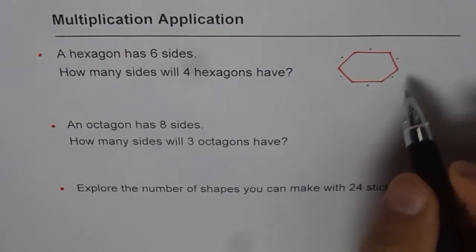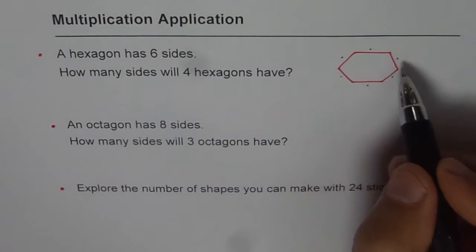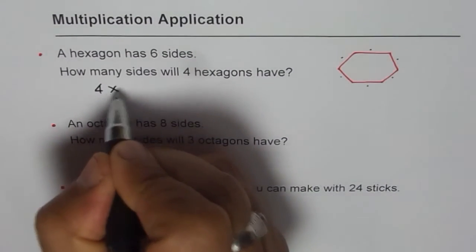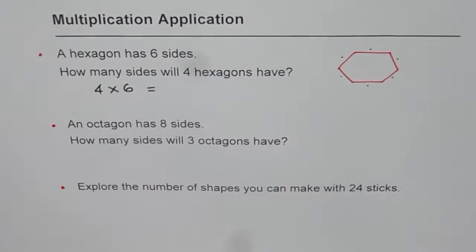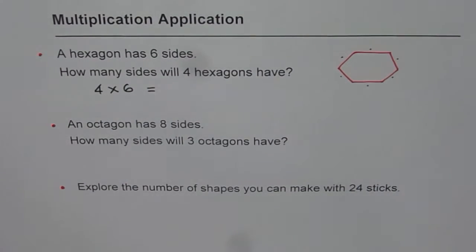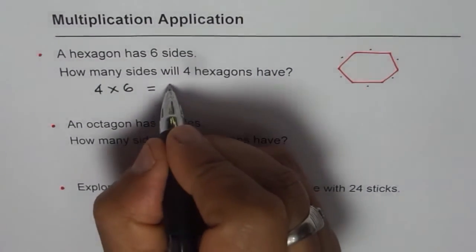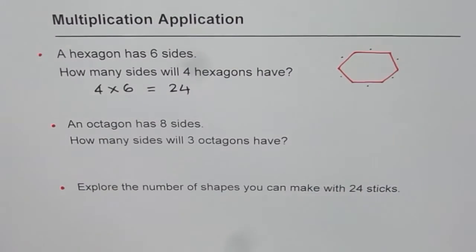The other way is we can count the number of sides four times, right? That is to say, four times six. And that should give us the answer, right? Some of you who know four times six is twenty-four, you can write down your answer.